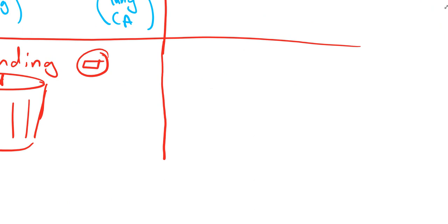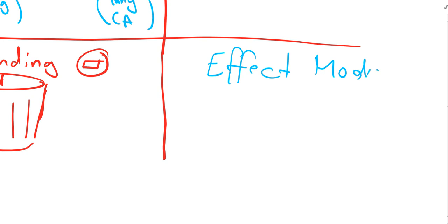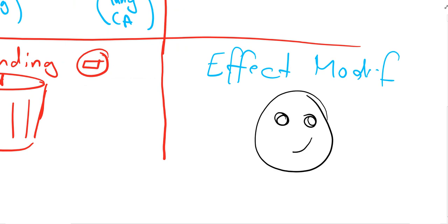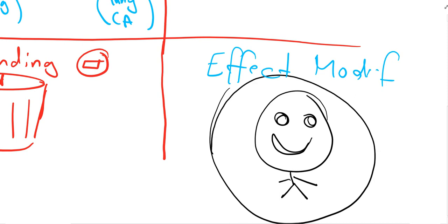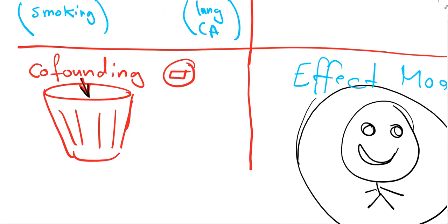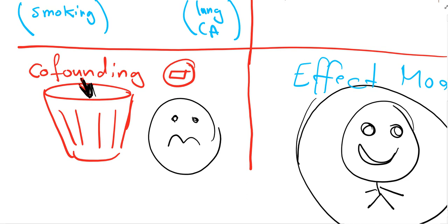Unlike effect modification — in effect modification I need to find it, because it's important. Effect modification is a nice, gentle factor. You need to find it in your study because it's going to help you. You'll know whether it has a positive or negative effect. You need it, you need to identify it. While in confounding, you put it in the garbage — you don't want that disturbing factor.